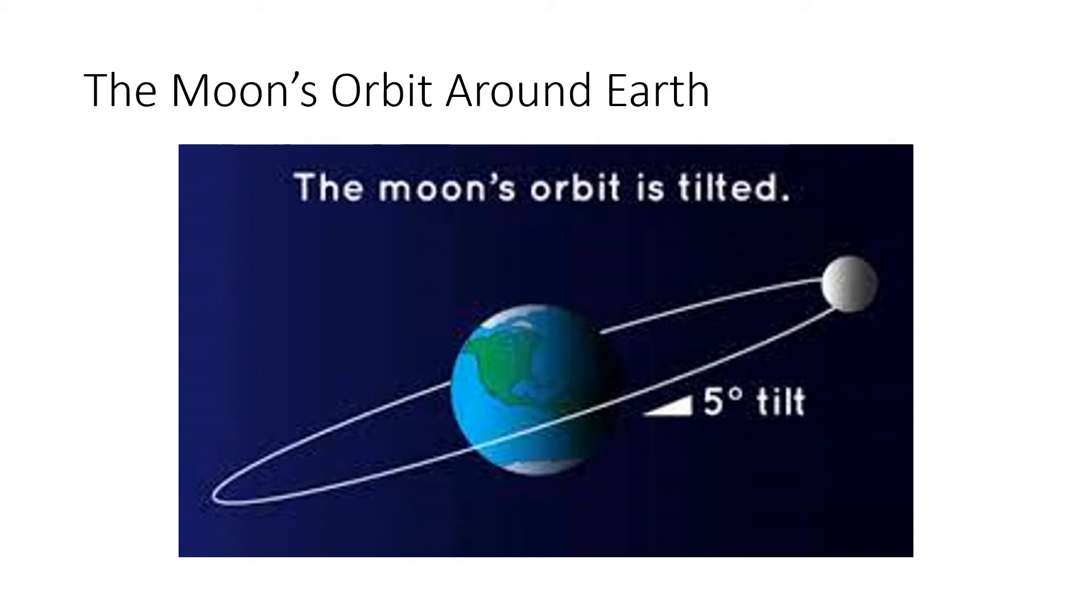Here is the moon as it's orbiting around Earth. It's got kind of a five degree tilt. Our equator is here, and if you measure this angle here, this angle is going to be five degree tilt. When we talk about the Earth, the Earth has a 23 degree tilt compared to the sun. The moon has a five degree tilt.